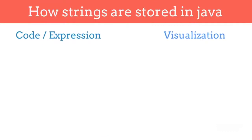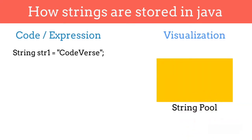Consider we want to create a string with the value CodeVerse and store it in str1 variable. When we use the expression String str1 equals CodeVerse, then Java will create an object in a string pool with the value CodeVerse and return its reference.